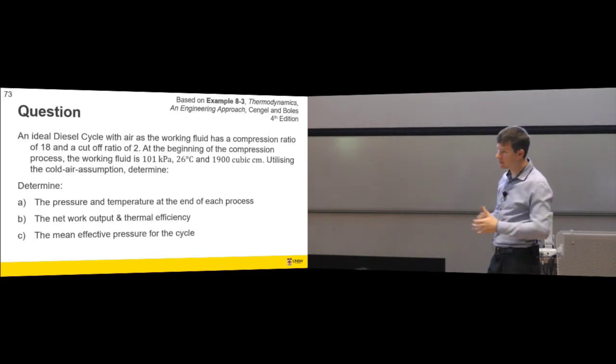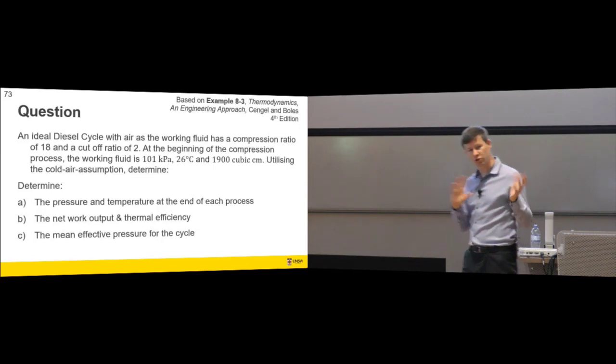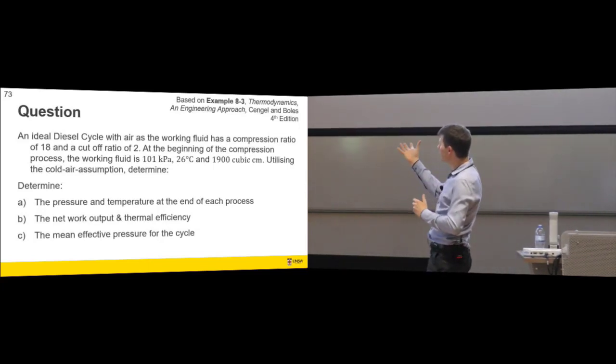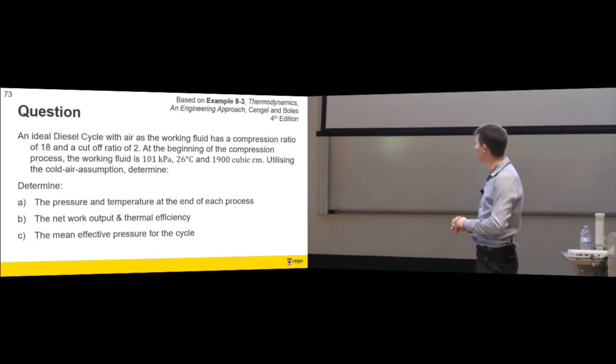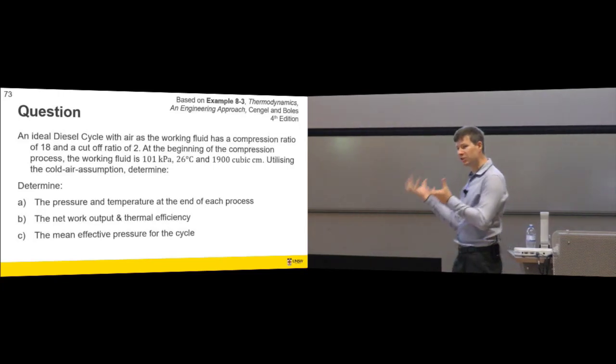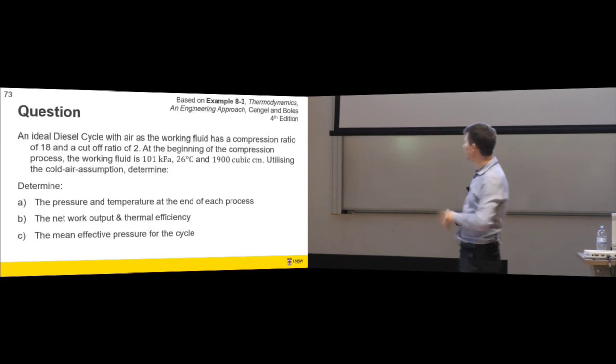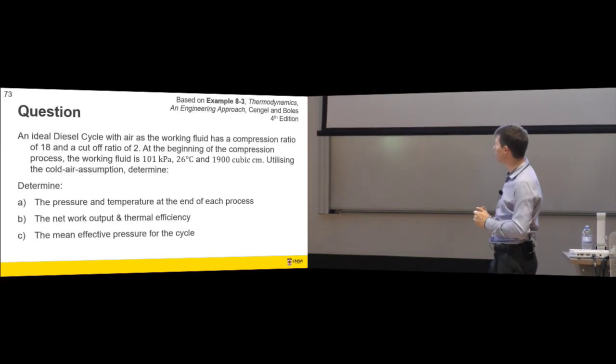An ideal diesel cycle with air as the working fluid has a compression ratio of 18. This number is higher than the previous compression ratio. And a cut-off ratio of 2. So I've introduced a new term, cut-off ratio. We'll need to know what that means.